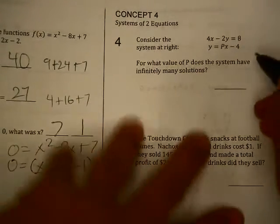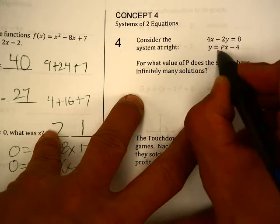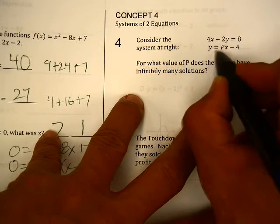Problem number four. This is all set up. 4x minus 2y equals 8, and y equals px minus 4.